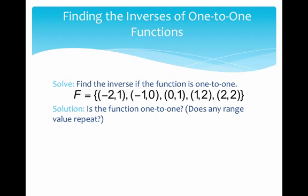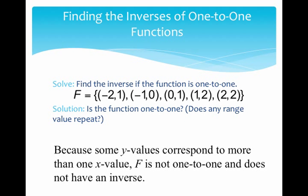So let's find the inverse of these five points. Is the function one-to-one, meaning does any range value repeat? Yes. Notice here that we have both one and two x's being mapped to the y value two. So here's an example where f is not one-to-one. If I ever give you a function that is not one-to-one in the homework or on the exam, then there's nothing you can do. You just say the inverse does not exist here.